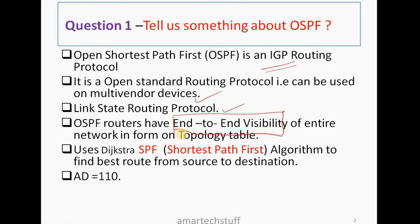OSPF uses something known as the Dijkstra algorithm, also known as SPF — Shortest Path First — which runs on the topology table and finds the best route to reach a particular destination. This is a very important point and can be a separate interview question: what algorithm does OSPF use to find the best route?